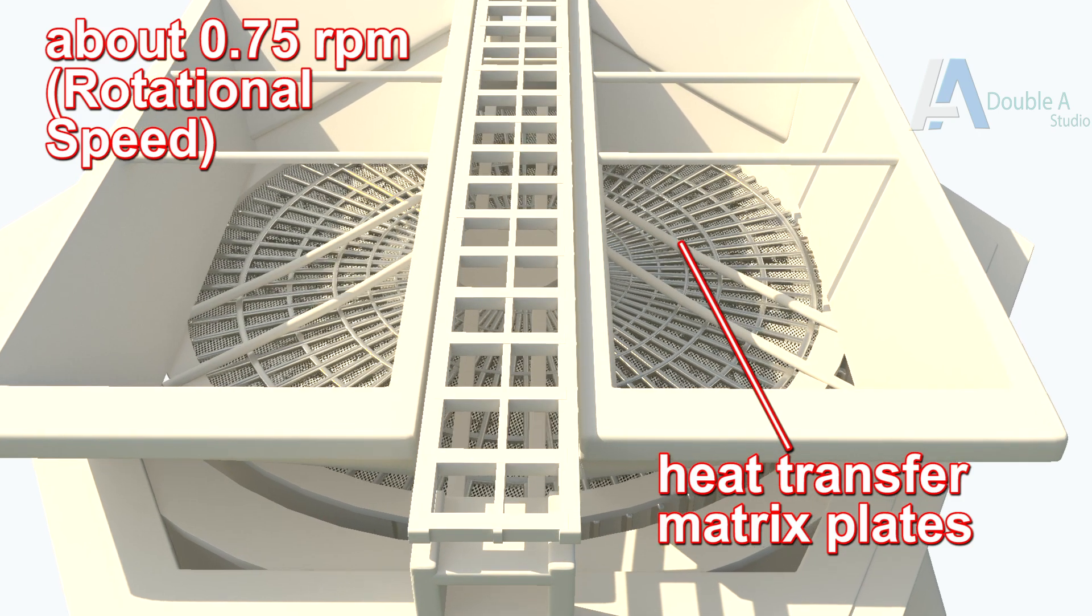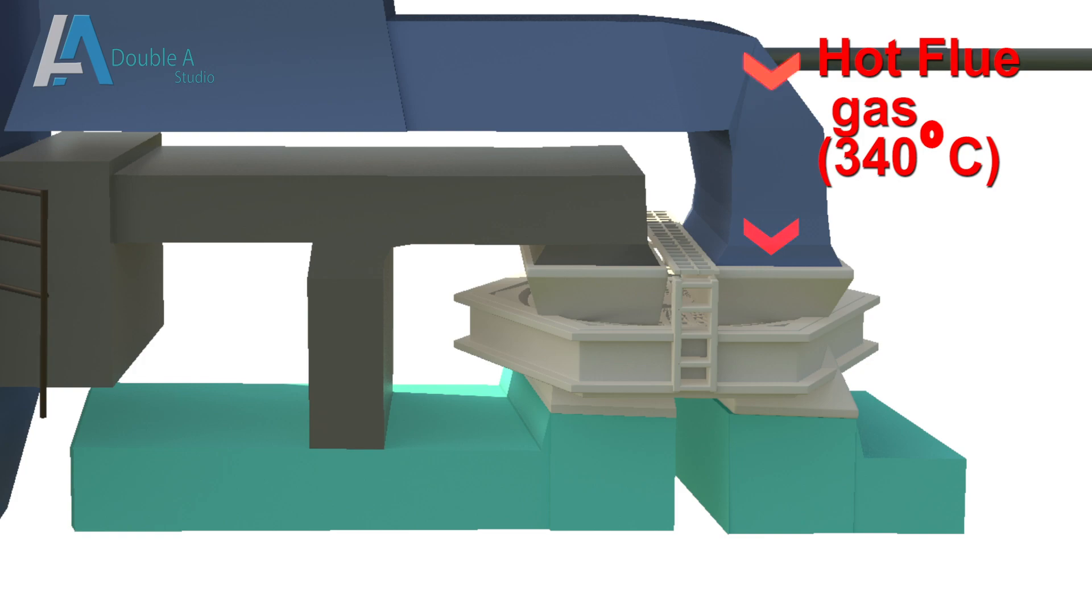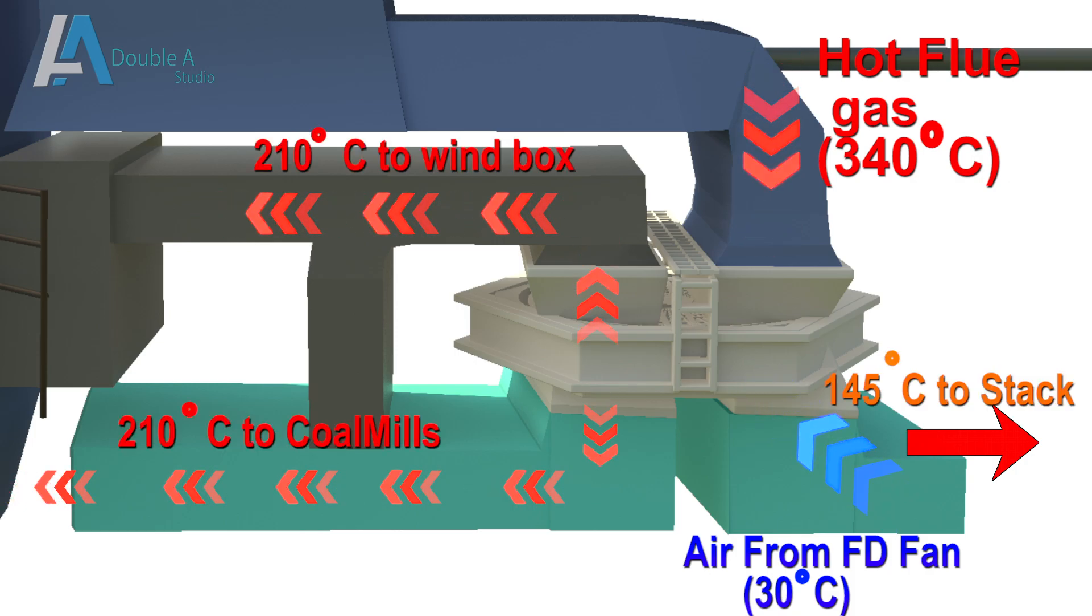When hot flue gas enters air preheater inlet duct at about 340 degrees centigrade, forced draft fans force ambient air of 30 degrees from other side of air preheater. During rotation, heat transfer takes place from flue gas to ambient air and temperature of air and flue gas comes to 210 degrees and 145 degrees centigrade respectively. However, there is an optimum value, about 140 degree of heat drop in flue gas to prevent corrosion.